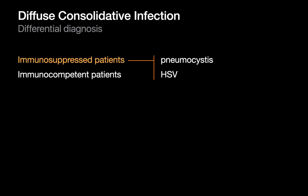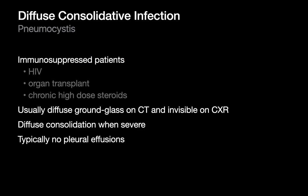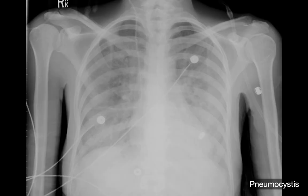In immunosuppressed patients, two infections to think about that could cause a diffuse consolidative pattern are Pneumocystis and HSV. Pneumocystis can be seen in HIV patients with low CD4 counts, but also in organ transplant recipients. Usually the presentation is diffuse ground glass on CT scan that's not perceptible on chest X-ray, but in severe cases that diffuse ground glass may progress to diffuse consolidation visible on chest X-ray and CT. Typically in these patients, no pleural effusion. Here's an example of a severe case of Pneumocystis presenting as diffuse consolidation.